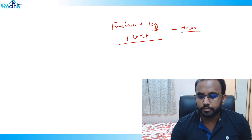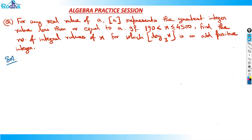This question says: for any real value of 'a', the integral part of 'a' represents the greatest integer value less than or equal to 'a' — that is the greatest integer function (GIF). If x is between 190 and 4500, find the number of integral values of x for which log of x base 3 is an odd positive integer.